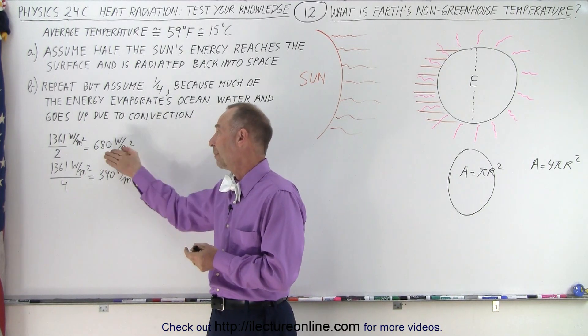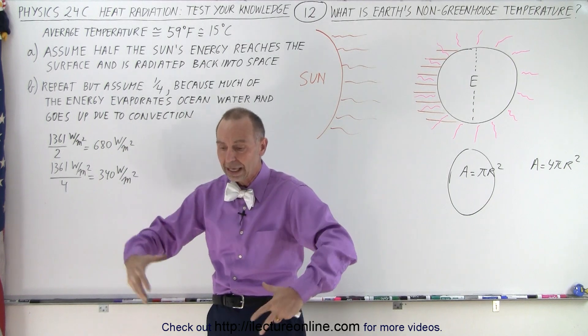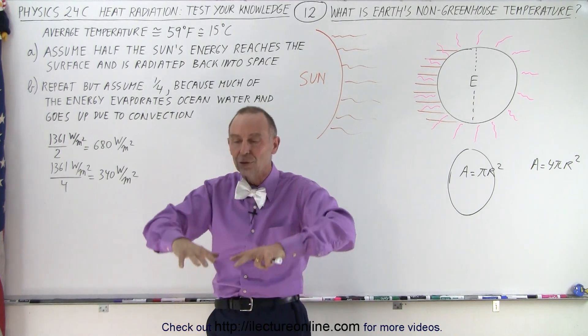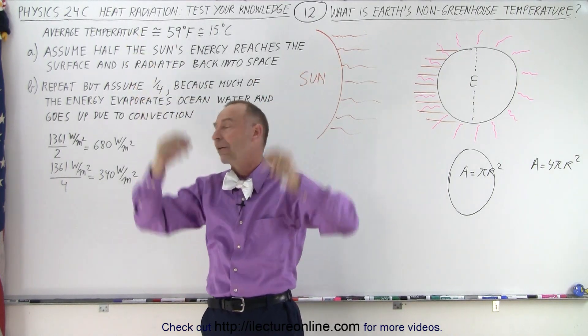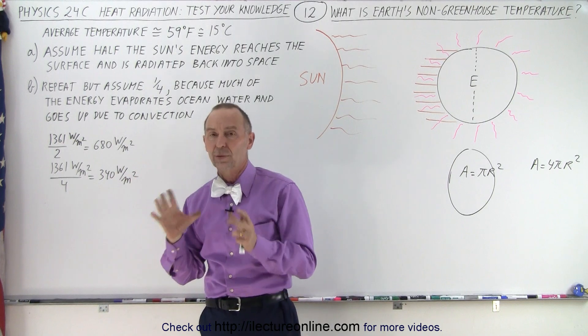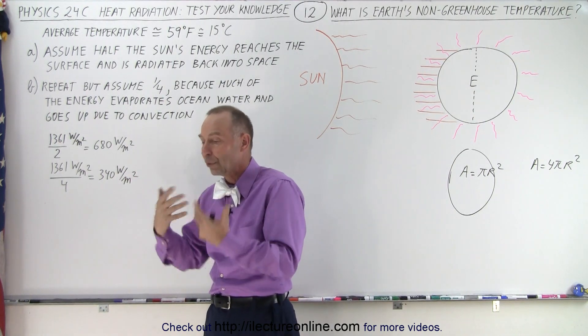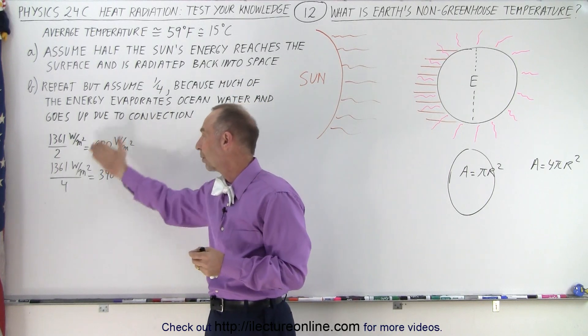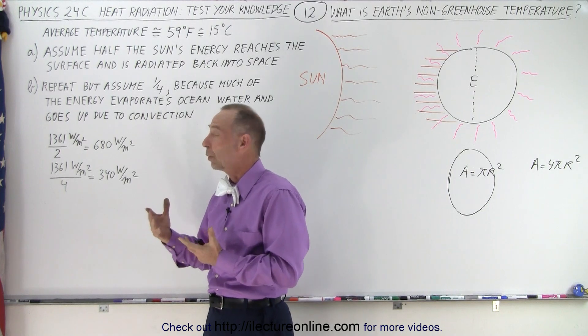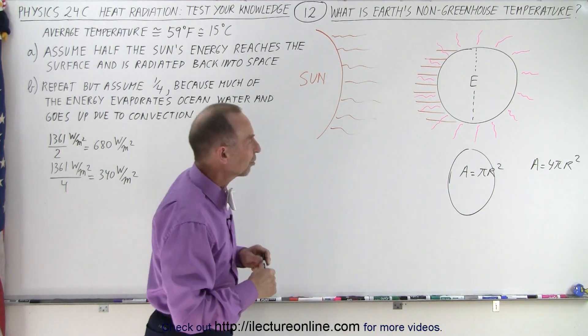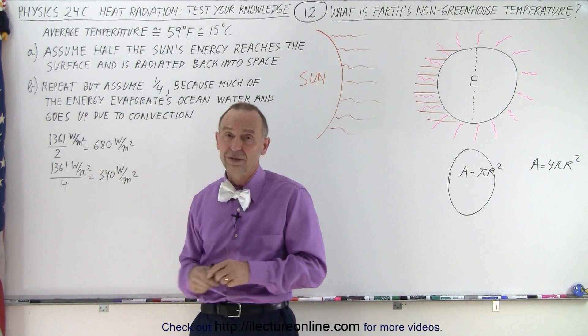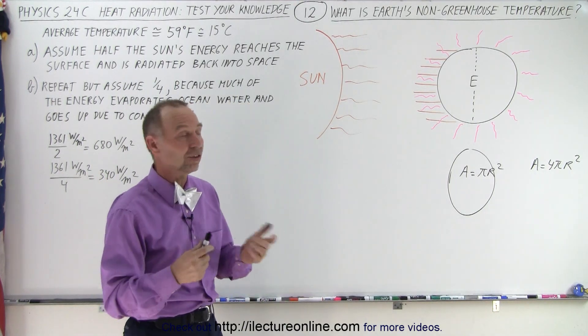Then we need to take into account that a fair amount of that is being absorbed by the oceans, where the energy then evaporates the water of the oceans, and that then through convection goes into the upper atmosphere and then gets sent back out into space. So somewhere between 680 watts per square meter and 340 watts per square meter is the amount of heat that's being converted into radiation and sent back into space. And so we're going to work with those two numbers to kind of come up with an average number of the temperature of the Earth what it would be if there were no greenhouse gases in the atmosphere. So this is just a very basic approach. If you want to do a real good job, we need to take into account a lot more things in our model. But this is a good start to see what it would be.